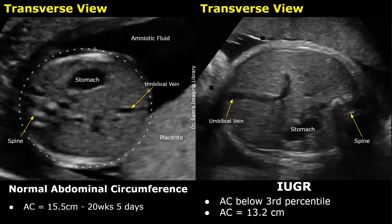Now we will compare features of a normal pregnancy with features of a growth-restricted fetus. In IUGR, the abdominal circumference is usually affected. On the left, we have a normal measurement of abdominal circumference corresponding to 20 weeks 5 days, and by LMP it was also 20 weeks. On the right, we have a small measurement of abdominal circumference — by LMP the gestational age was 20 weeks, but the AC measurement was 13.2 centimeters instead of the expected approximately 15.5 centimeters.